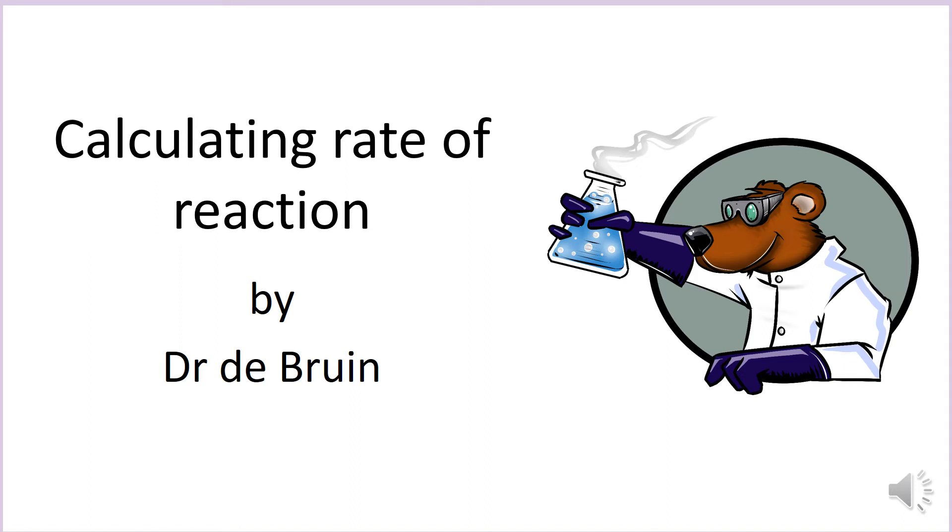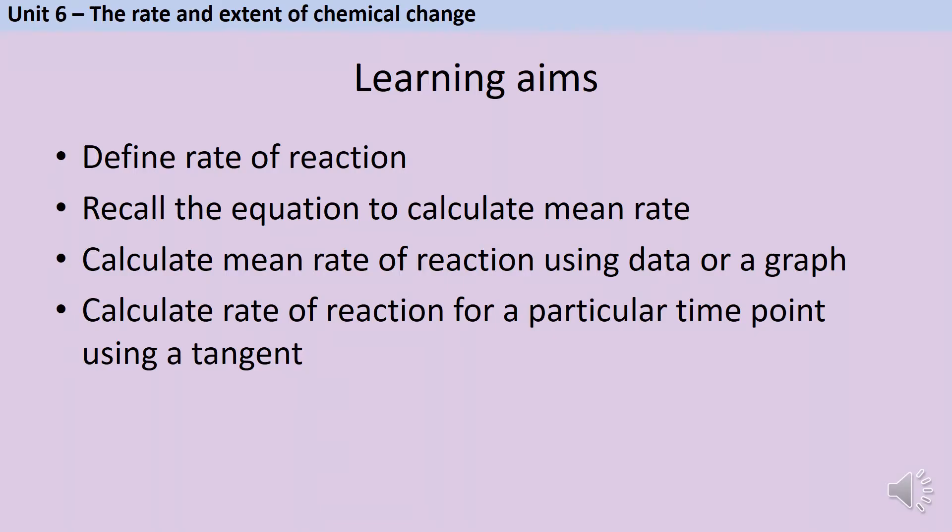This is a revision video for the quantitative side of the GCSE chemistry topic, Rates of Reaction. In this video we're going to look at how we can calculate rate using either numbers that you've been given or a graph. By the end of this video you should be able to define rate of reaction, recall an equation to calculate mean rate of reaction, calculate the mean rate using either numerical data or a straight line graph, and finally calculate the rate of reaction for a particular time point on a curved graph by drawing a tangent.